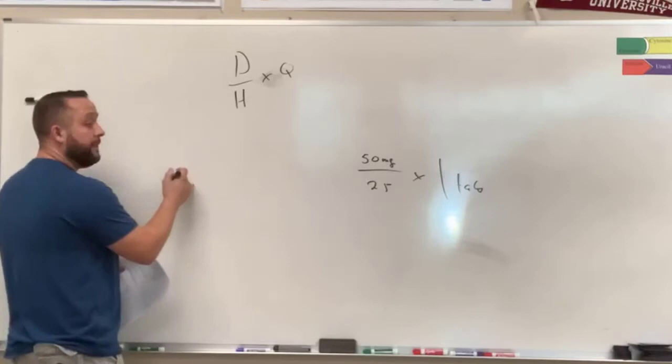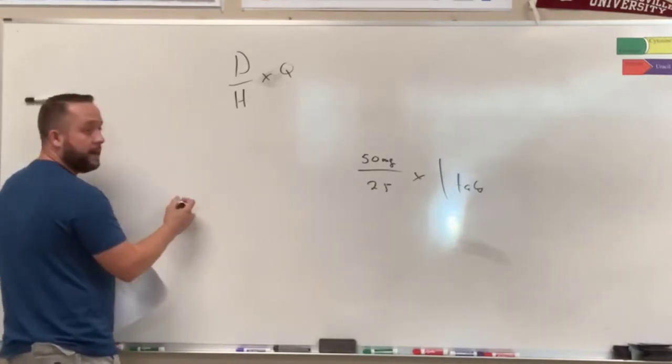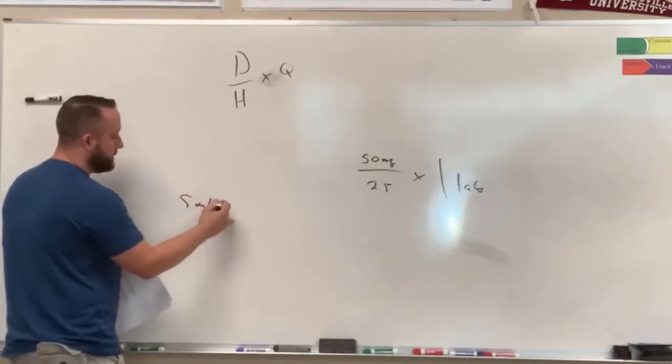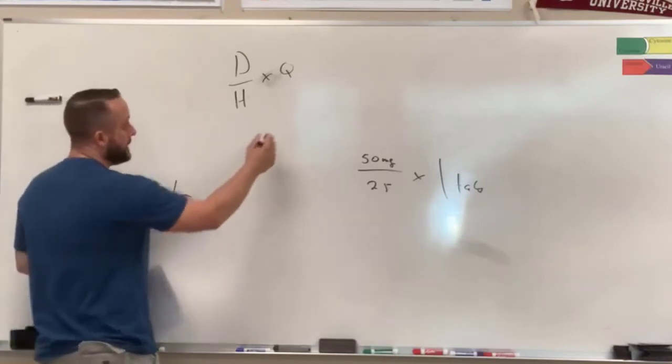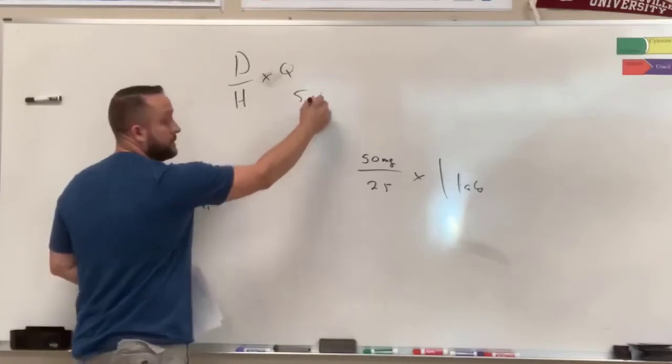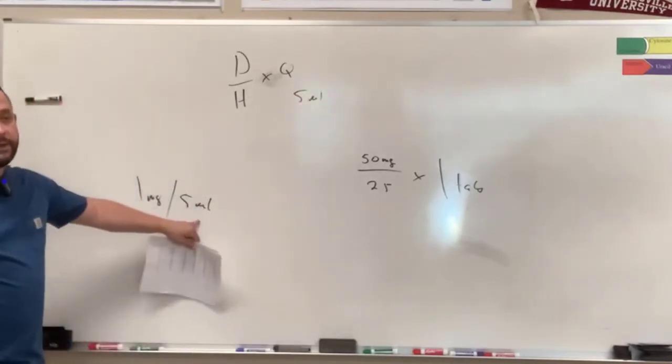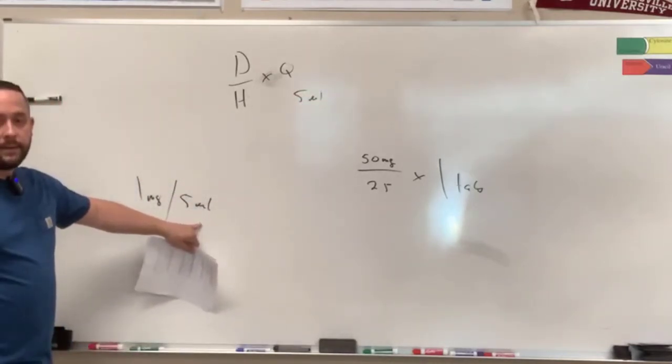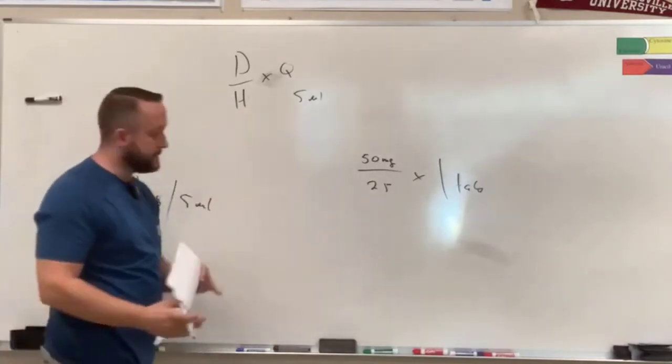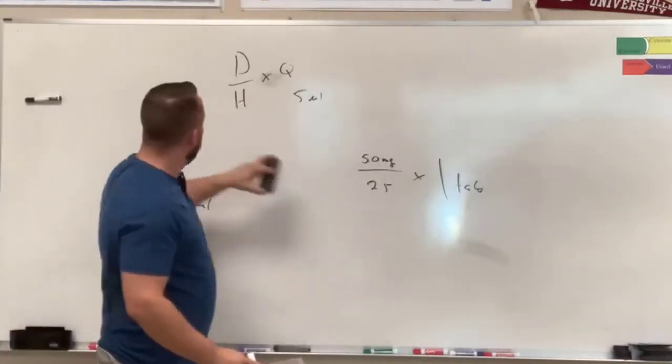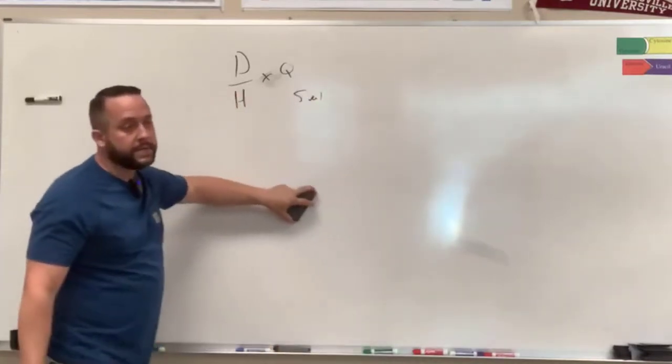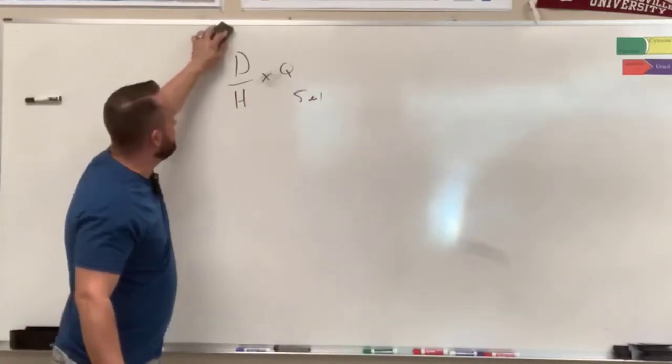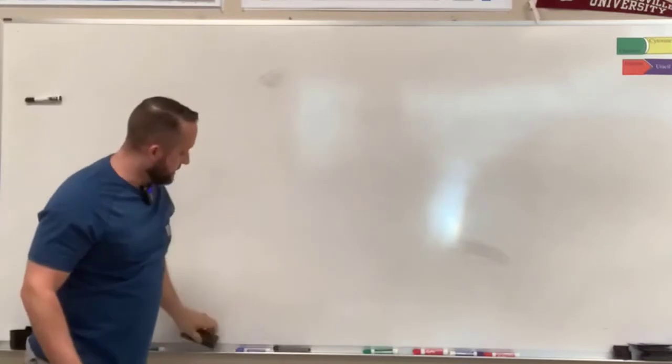But when you start getting into mls, when you've got to give 50 milligrams of volume and you've got a vial that is 5 mls at 1 milligram per 5 mls, then that Q is going to be 5 mls. It's the quantity of whatever it's given in. That's where it's going to start to differ.